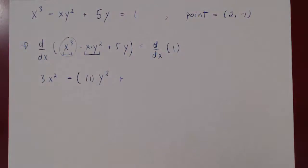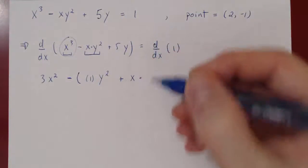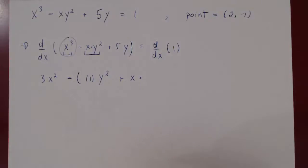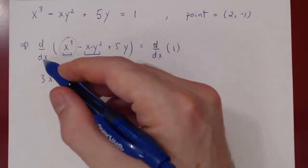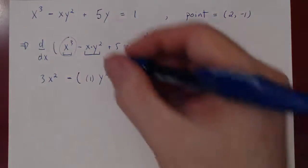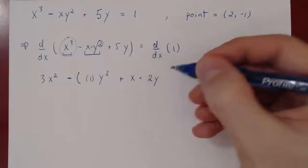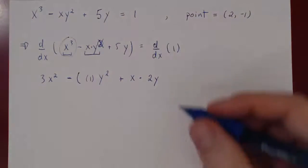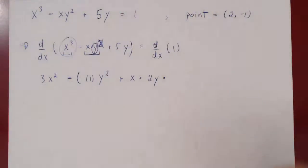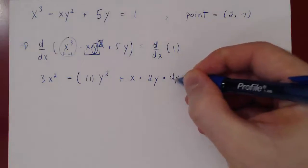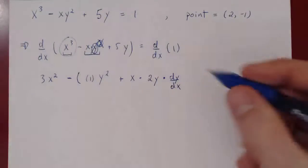Plus the first function, x, times the derivative of the second function. We differentiate y squared with respect to x, and since y is a function of x, we use the chain rule: first differentiate the power 2 to get 2y, then multiply by the derivative of y with respect to x. That takes care of the derivative of this part.